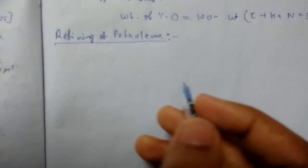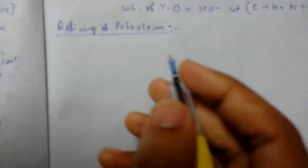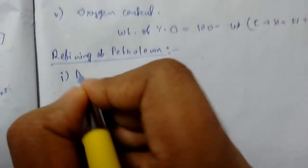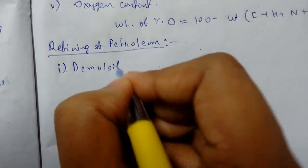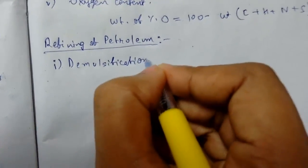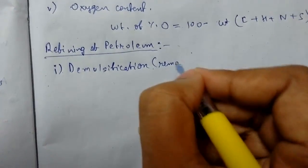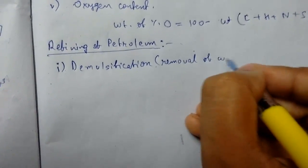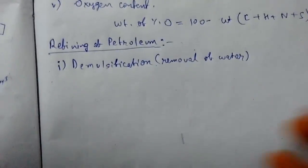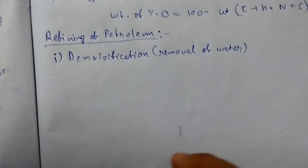So now we will study refining of petroleum. First step is demulsification, that is the removal of water. Crude oil remains in the form of stable emulsion of oil and salt water.